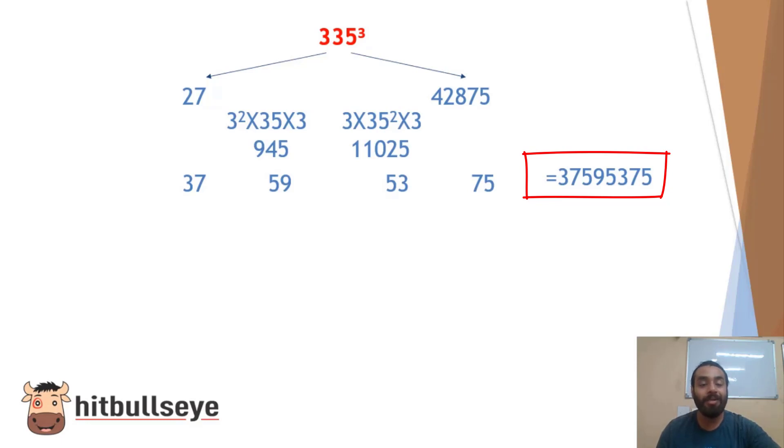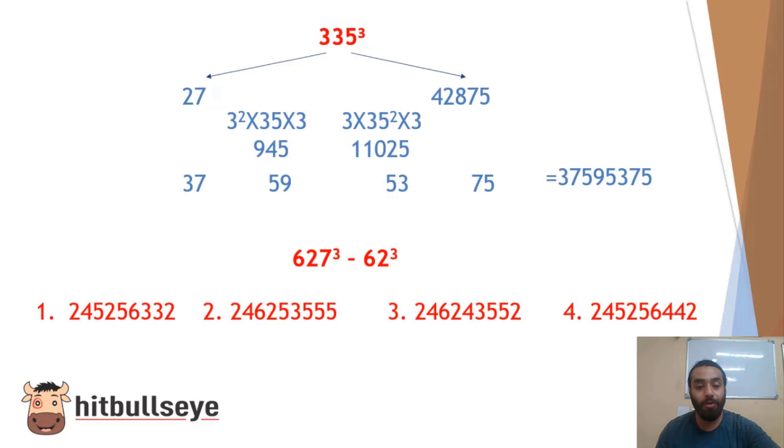This trick is for cube numbers from 1 to 1000. I hope all of you liked it. You have to get the answer for 627 cube minus 62 cube. Your options are given as follows. Comment down below in the comment box. If you like this video, if you find the answer, do type down what answer you are getting and do subscribe to our Hitbullseye channel. Thank you.